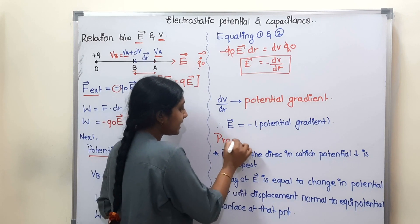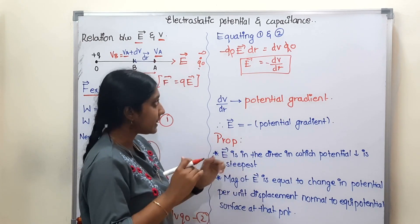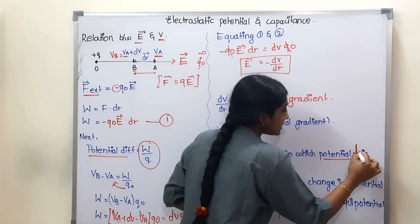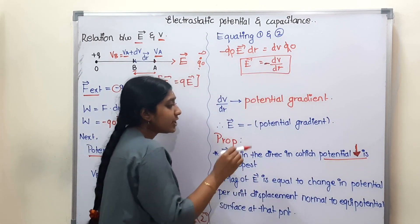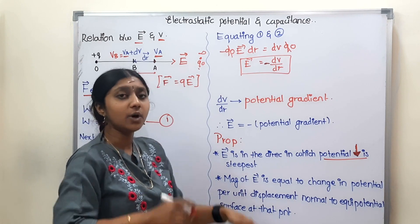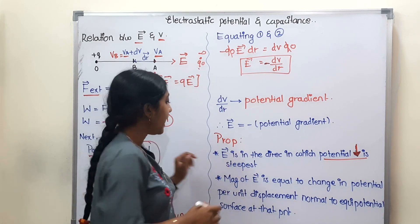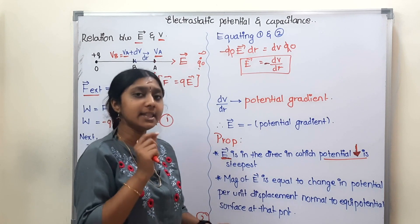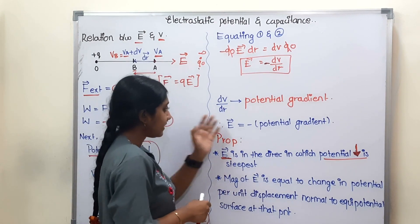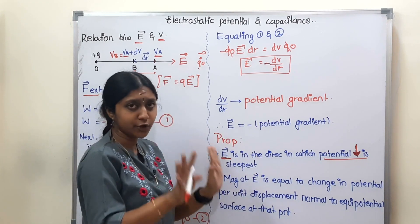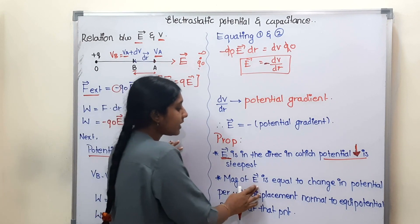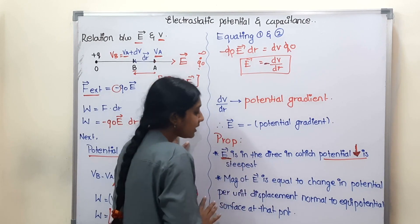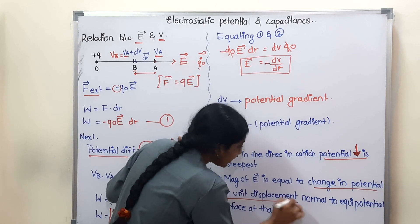Now there are properties of this result. The electric field points in the direction of decreasing potential — that is, potential decreases in the direction of the electric field. The electric field is strongest where the potential is steepest. The magnitude of electric field equals the magnitude of the potential gradient, which is change in potential per unit displacement.